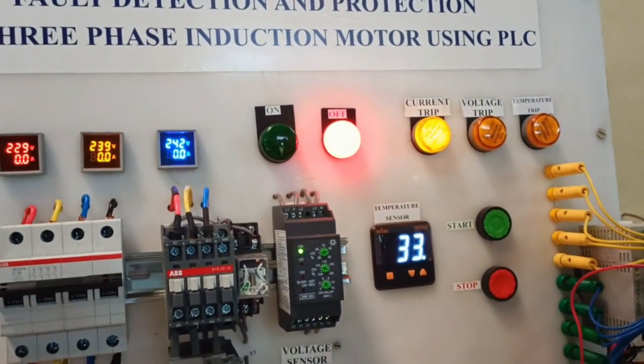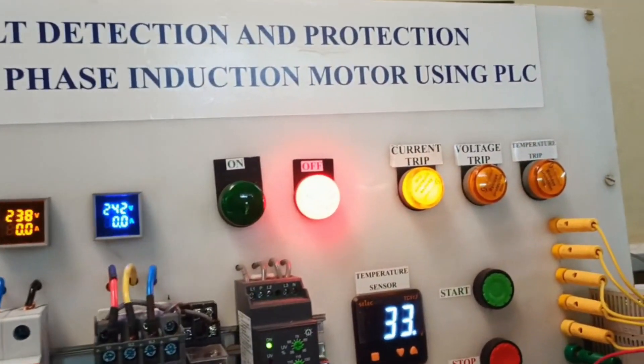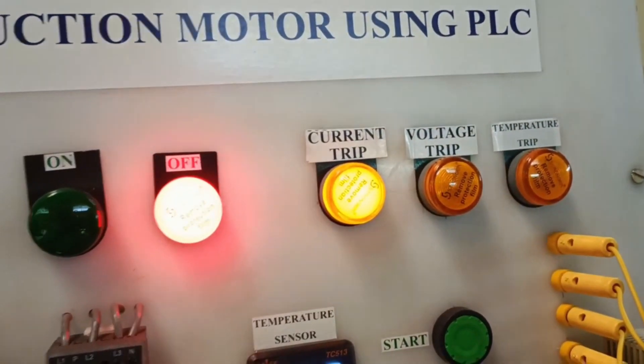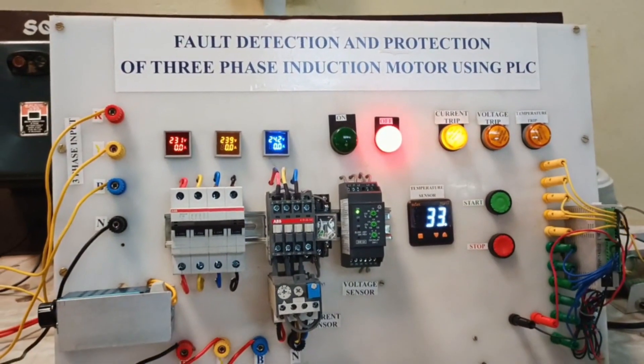So now due to the over current, the PLC has detected and turned off the motor. So the current fault switch indicator has turned on.